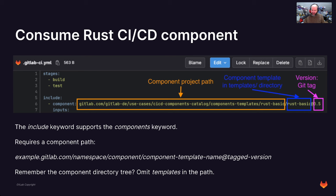Let's assume the Rust component works on its own. How do you consume a CI/CD component? You can reuse the existing CI/CD configuration language in GitLab — it's just that instead of including a template or a specific file path, you are including a component. The main difference is you provide the component project path — which is a little long in this example, but shows that you can use subgroups and you're not bound to the top-level namespace.